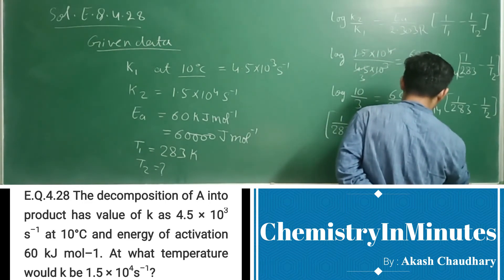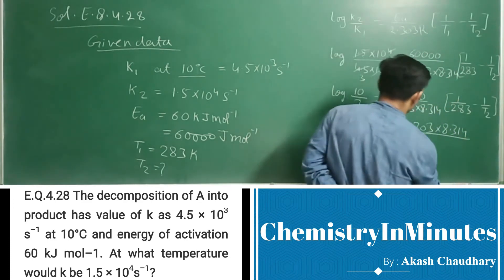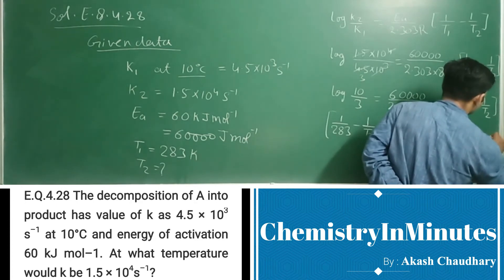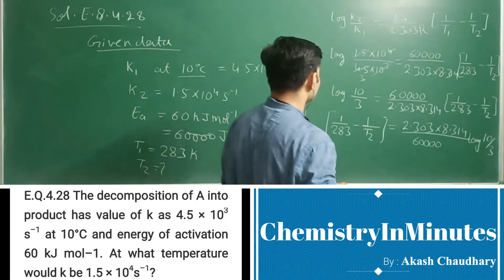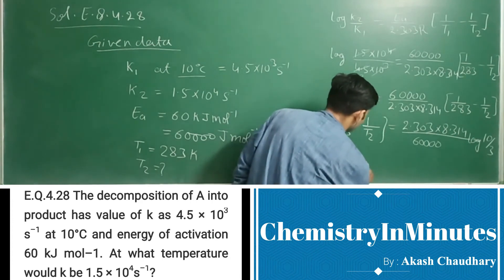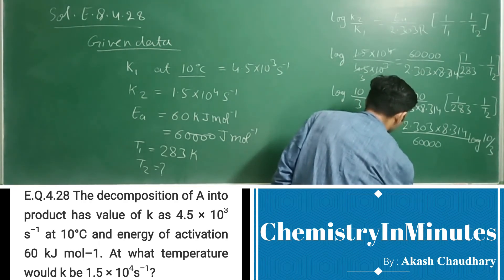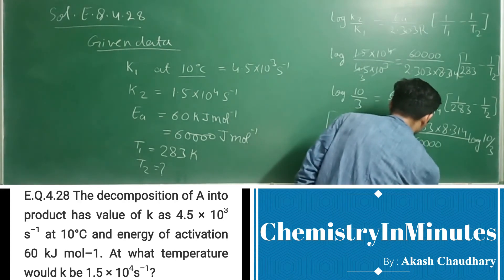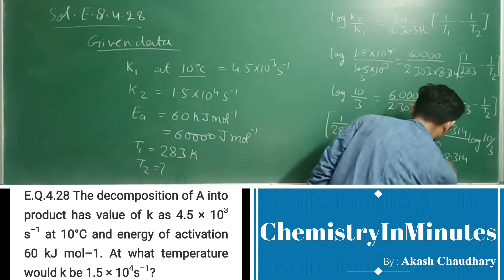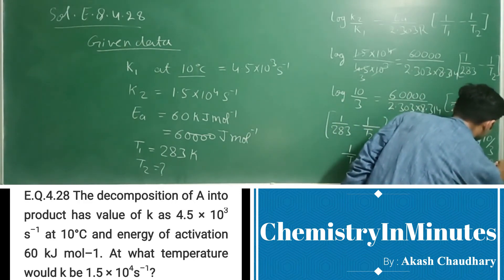1/T2 will come as 1/283 minus (2.303×8.314)/(60,000×log(10/3)).